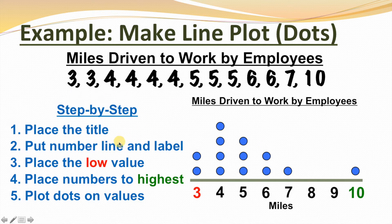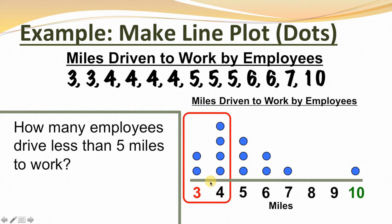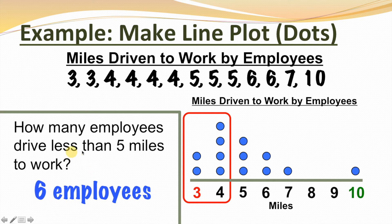More important than just making a line plot is actually using it to answer questions. How many employees drive less than five miles to work? Here's the five. We're looking for everything that's less than five — that means this data over here. Counting the dots for values less than five: there were six employees that drove less than five miles to work.